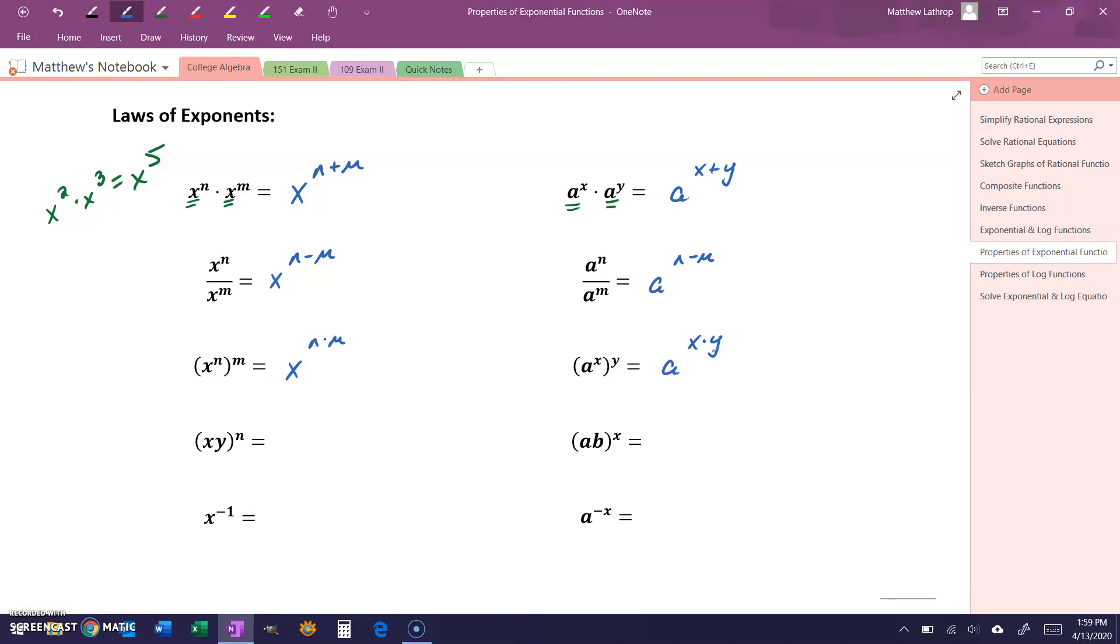If we have a quantity x times y raised to the nth power, we can take that exponent and apply it to each factor individually. So we could break that into x to the nth power times y to the nth power. With exponential functions, we can do the same thing, rewriting a times b, that quantity to the xth power, as a to the x times b to the x.